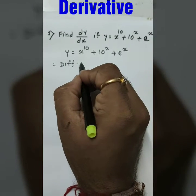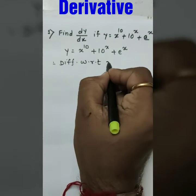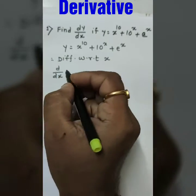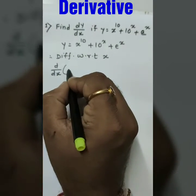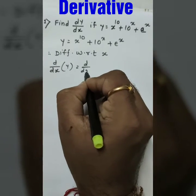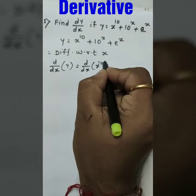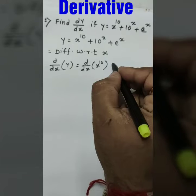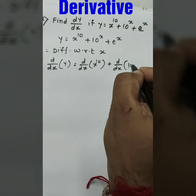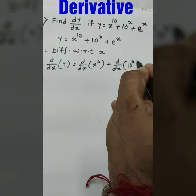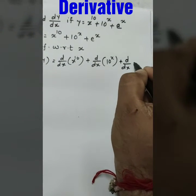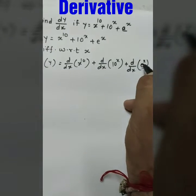Differentiate with respect to x. So, dy by dx of y is equal to dy by dx of x raise to 10 plus dy by dx of 10 raise to x plus dy by dx of e raise to x.